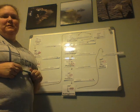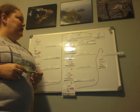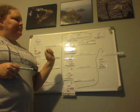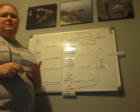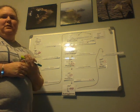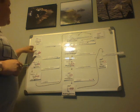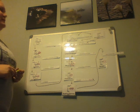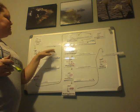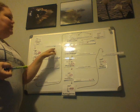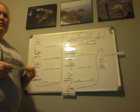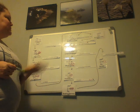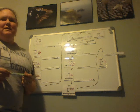Glycolysis takes place in the cytoplasm, which is the inner part of the cell outside of the nucleus but still within the cell membrane. The citric acid cycle and electron transport chain both take place in the mitochondria. Now, the fun thing about science is that a lot of times the enzymes will tell you what they're actually doing. An enzyme is basically a helper — it helps a reaction occur at a faster rate and lowers the activation energy.